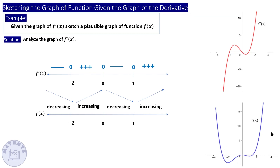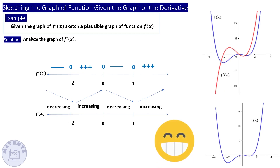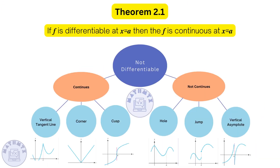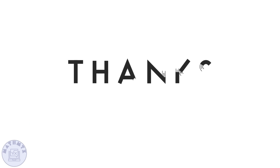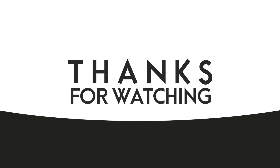This is just a plausible graph — someone can have a different graph, but the main characteristics will be the same. That's it for today. Don't forget to memorize the special cases. Thank you so much for watching — see you in the next video.